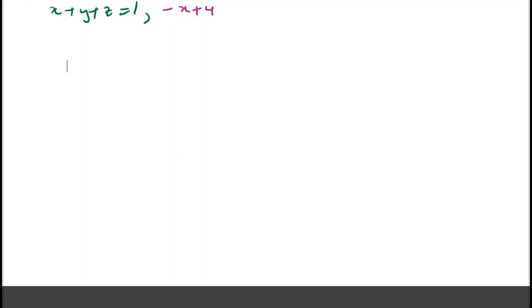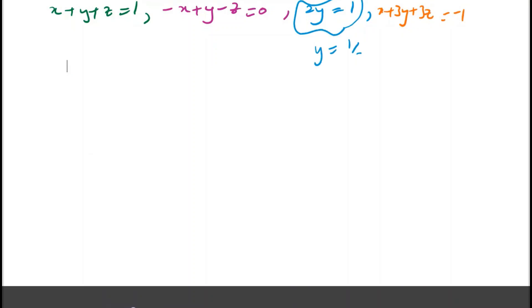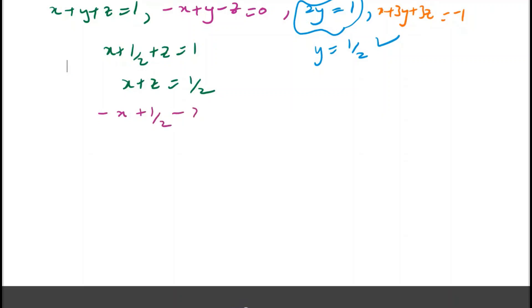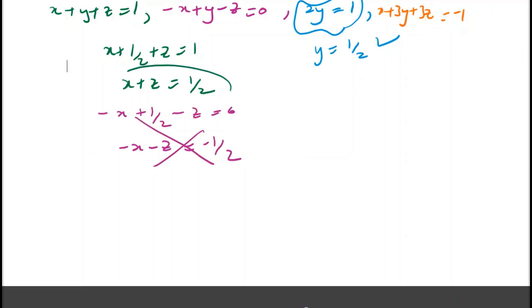On the worksheet we have four equations written in different colors. The blue equation gives us the value of y straight away, so we focus on the other equations. Taking the first two equations — the green and the purple one — we insert the value of y from the blue equation into them and solve. We note that both of them actually represent the same equation, so we take the green one and solve it with the orange one.